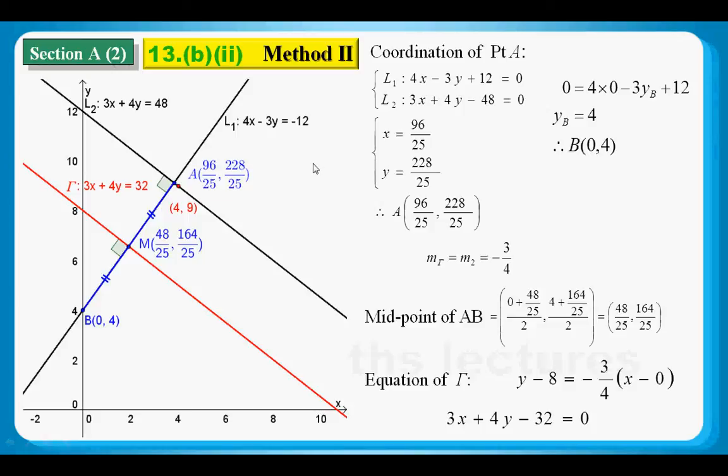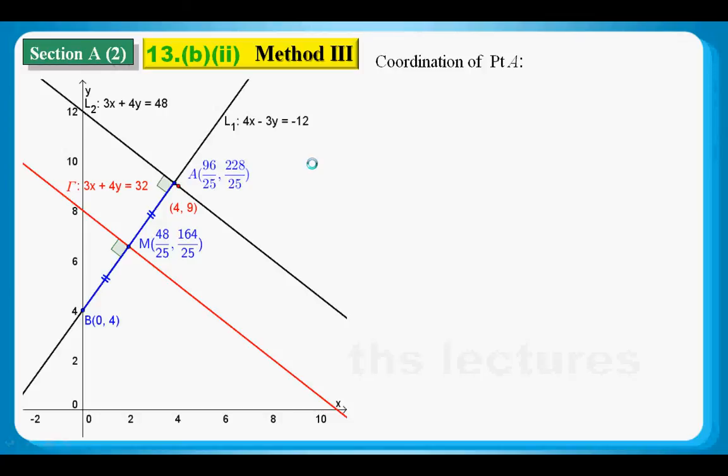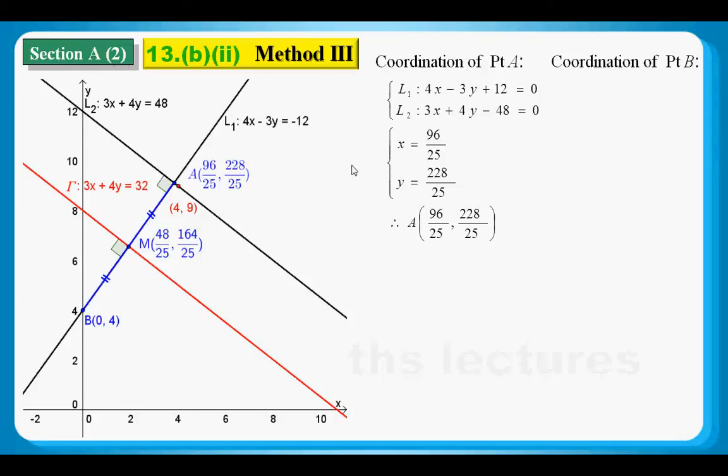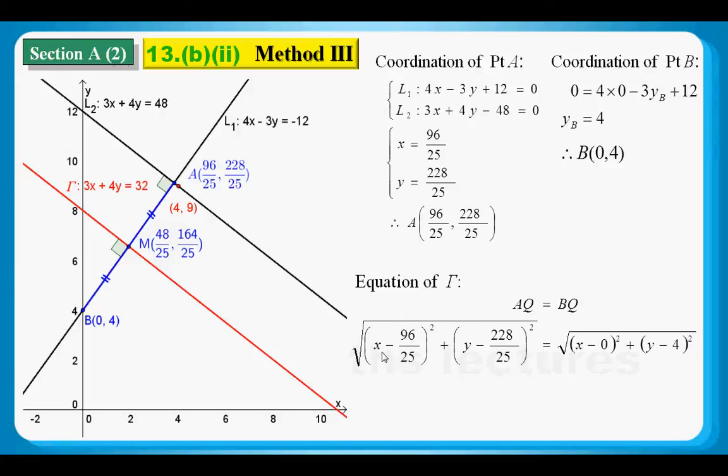There is a third way, and this way is more popular than method 2. Again, we need A. We need point A coordinates. And we also need point B coordinates. As it's already said in the question, AQ equals BQ. And Q is a general point. So, I set the coordinates of Q as (x,y). With the distance formula, I can also calculate the equation of gamma.